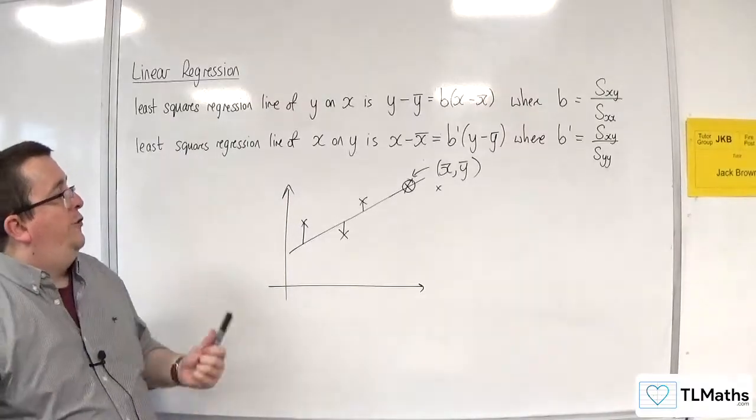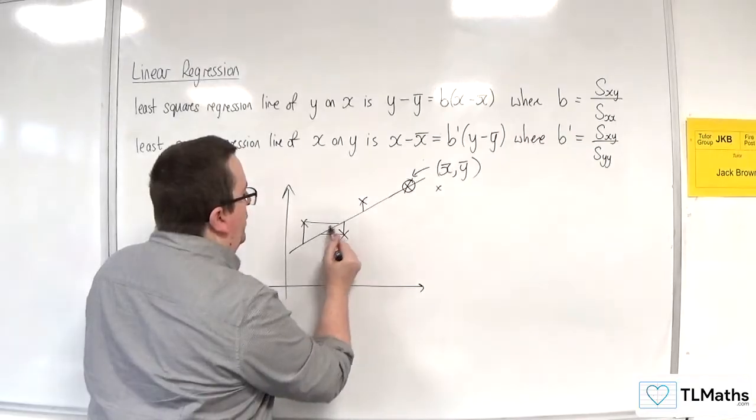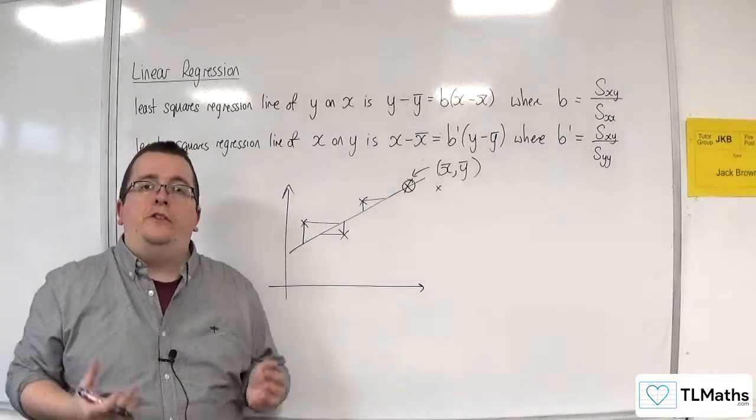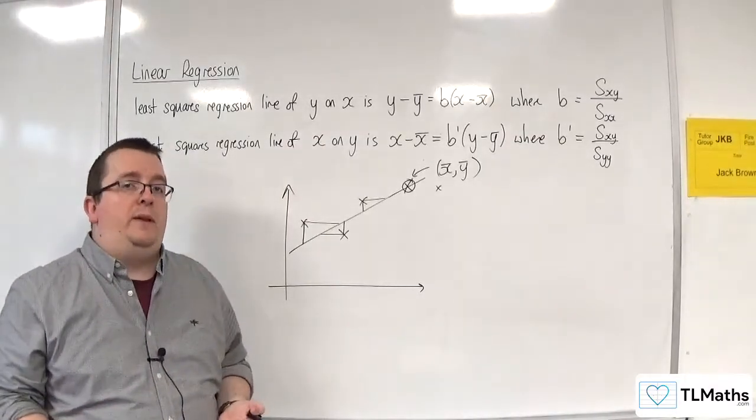Whereas the x on y minimises the squares of the horizontal distances. The consequence is that the two regression lines you get are not necessarily going to be the same.